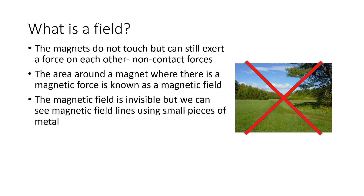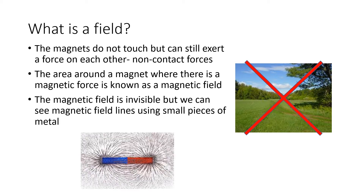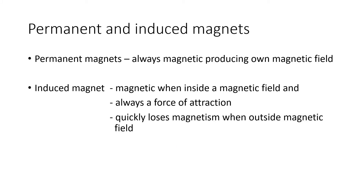The area around the magnet where a magnetic force exists is referred to as a magnetic field. Magnetic fields are invisible, but we can see what are called magnetic field lines using different types of experiments. Quite often iron filings is the classic one — they form lines and you end up with a pattern similar to what you can see on screen.